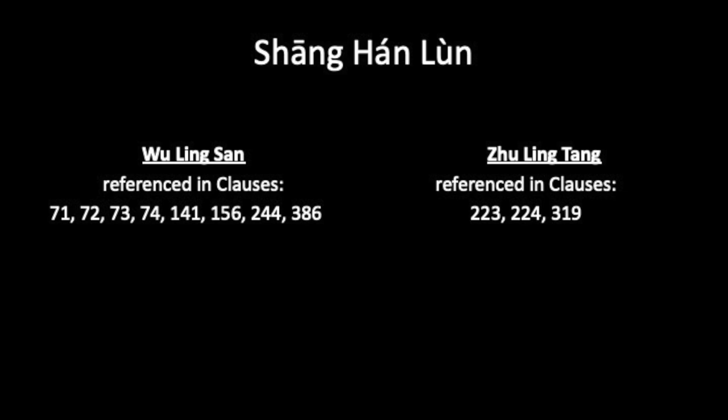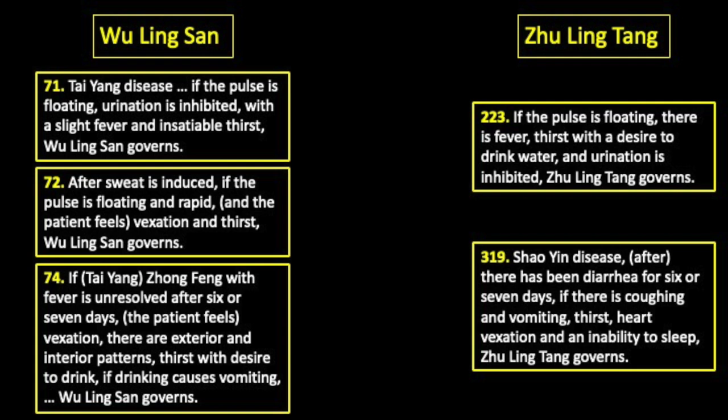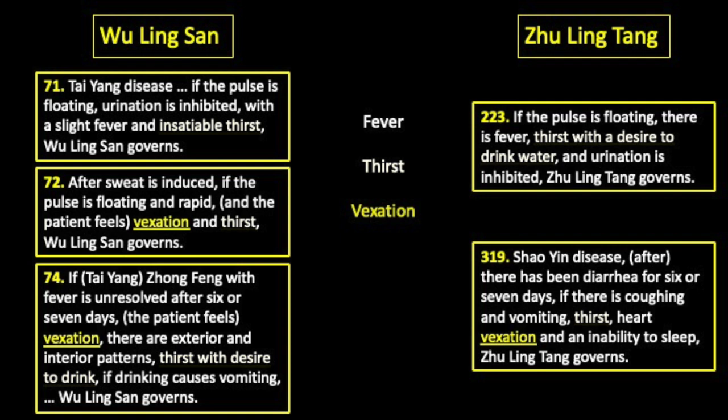To simplify this discussion, these are the most pertinent clauses. This slide gives the text corresponding to these clauses, giving the relevant signs and symptoms for both formulas. Both Wu Ling San and Zhu Ling Tang clauses include indications for fever, patient thirst, vexation, and inhibited urination.